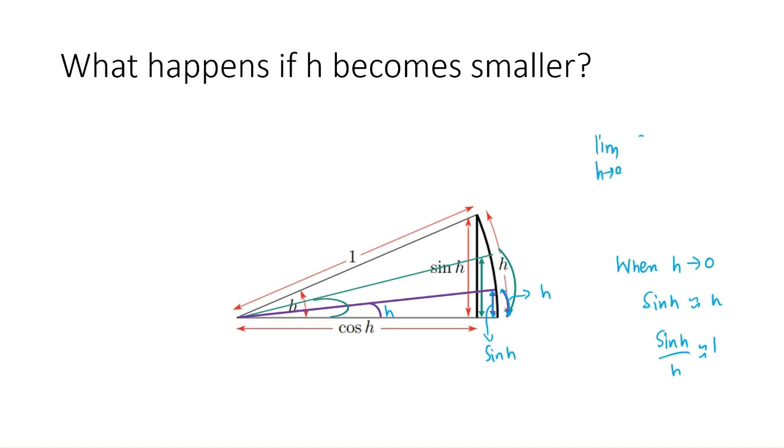Limit H goes to zero, sin(H) over H is one. Although in the beginning I used the notation x, but that's one and the same thing. Even if you write it like this, it's one and the same thing. So hope you understood both the proofs and I hope you liked the video. Thank you for watching.